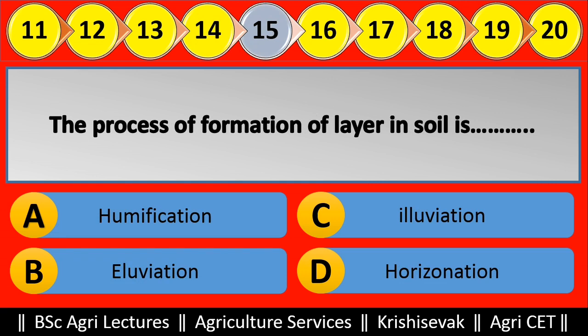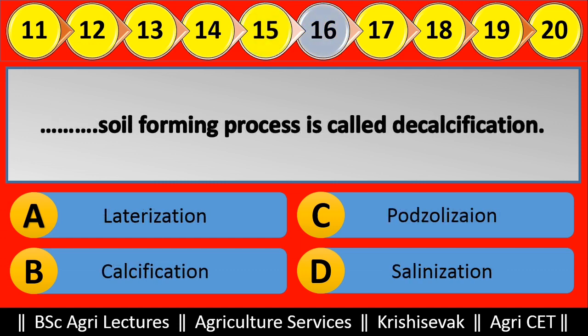Question 15: The process of formation of layers in soil is blank. Options are: (a) Humification, (b) Eluviation, (c) Illuviation, (d) Horizonation. Right answer is Horizonation.